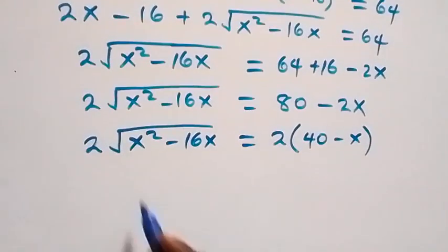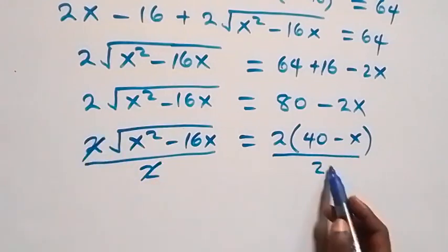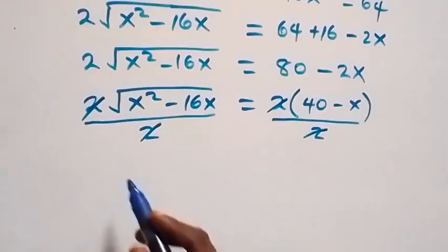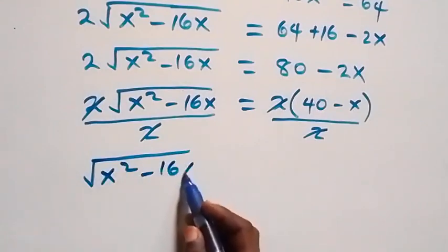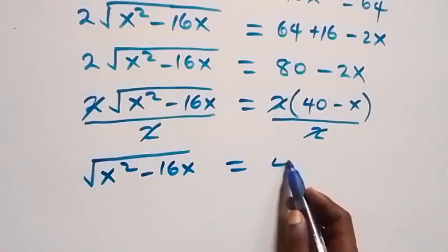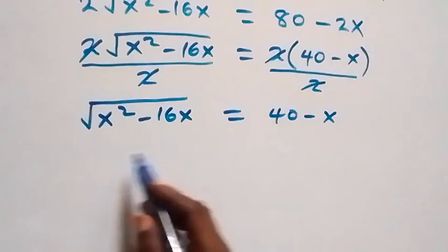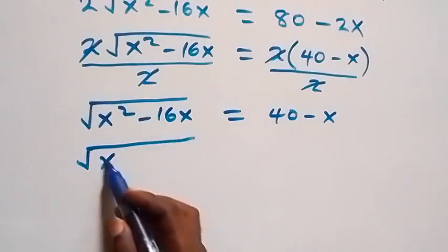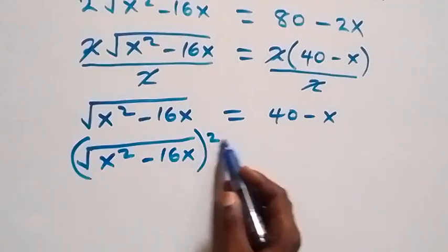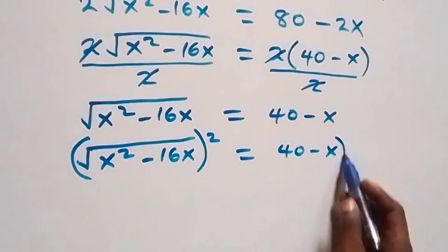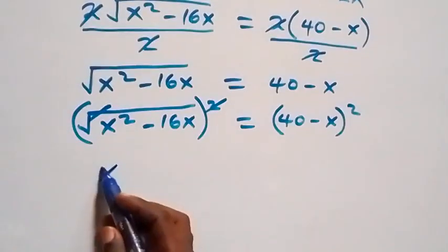Next, divide both sides by 2. The 2s cancel on each side, giving us √(x² - 16x) equals 40 - x. Then we square both sides: (√(x² - 16x))² equals (40 - x)². The square cancels the square root, leaving x² - 16x on the left.